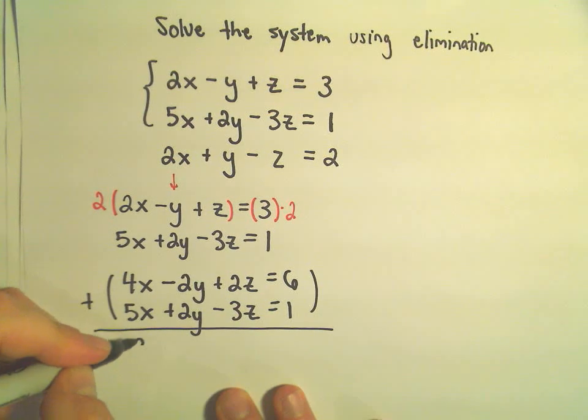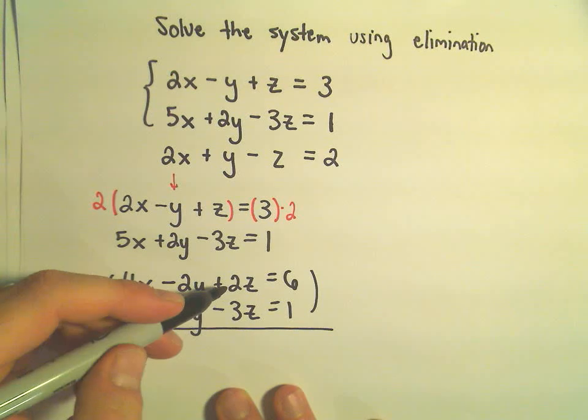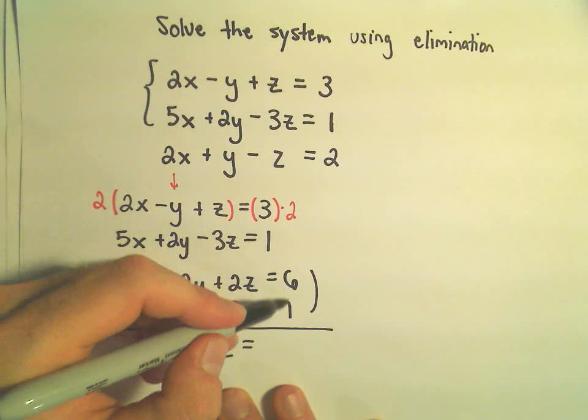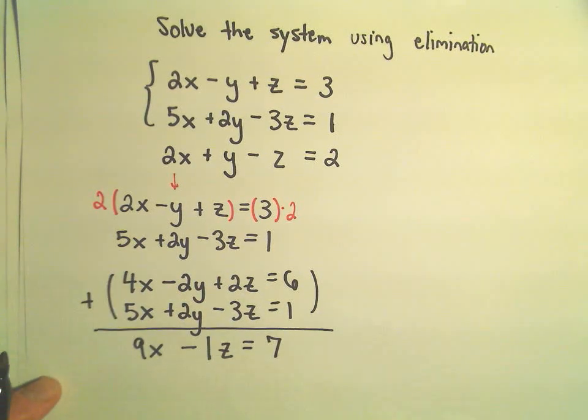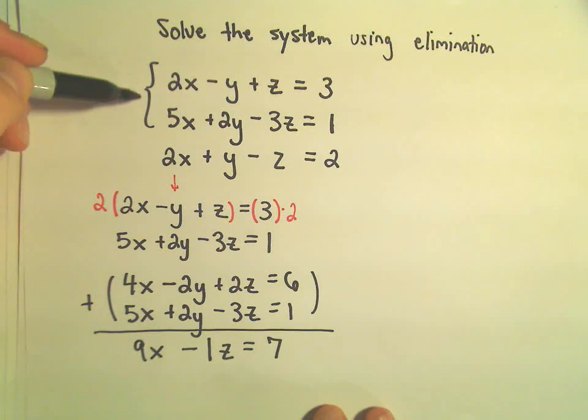And now I'm going to do my elimination by addition. So I'm going to have 9x, notice the y's cancel out, again that's why we did it, 2z plus negative 3z will be negative 1z. And then 6 plus 1 is going to be 7. Okay, so we took the first two equations and we got rid of the y.